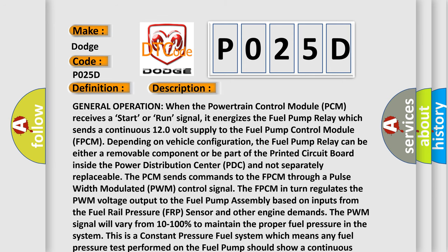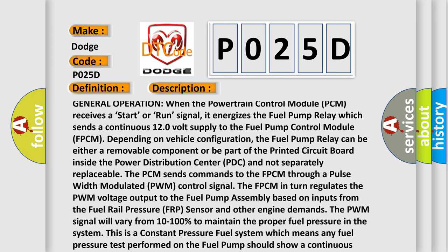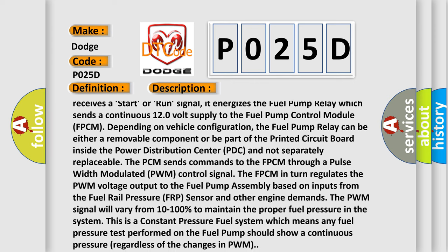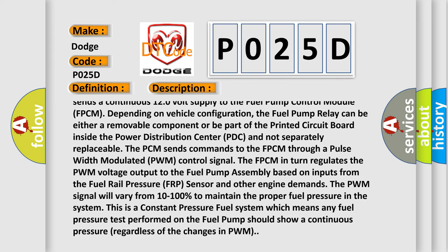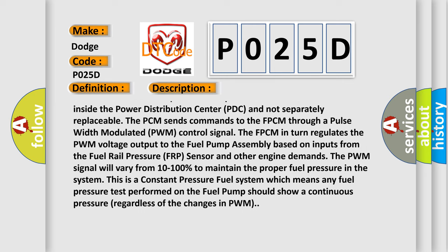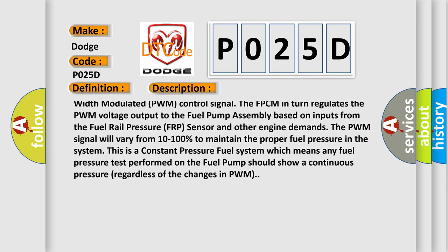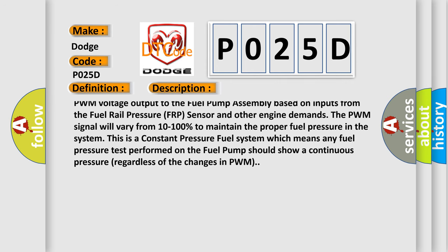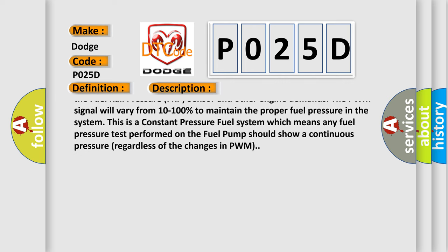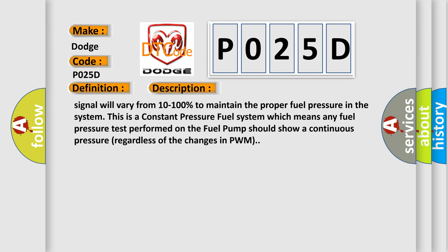General operation: when the powertrain control module (PCM) receives a start or run signal, it energizes the fuel pump relay, which sends a continuous 12-volt supply to the fuel pump control module (FPCM). Depending on vehicle configuration, the fuel pump relay can be either a removable component or part of the printed circuit board inside the power distribution center (PDC) and not separately replaceable. The PCM sends commands to the FPCM through a pulse width modulated (PWM) control signal. The FPCM regulates the PWM voltage output to the fuel pump assembly based on inputs from the fuel rail pressure (FRP) sensor and other engine demands. The PWM signal will vary from 10% to 100% to maintain proper fuel pressure. This is a constant pressure fuel system, meaning any fuel pressure test should show continuous pressure regardless of changes in PWM.